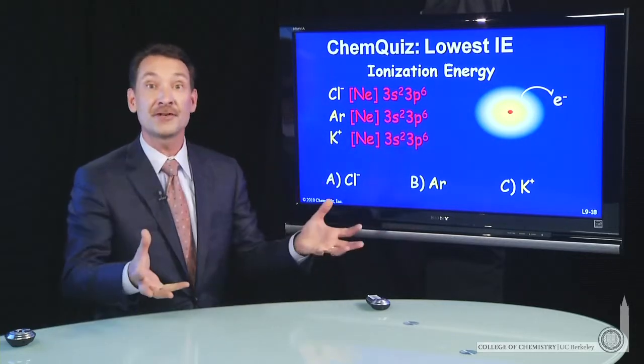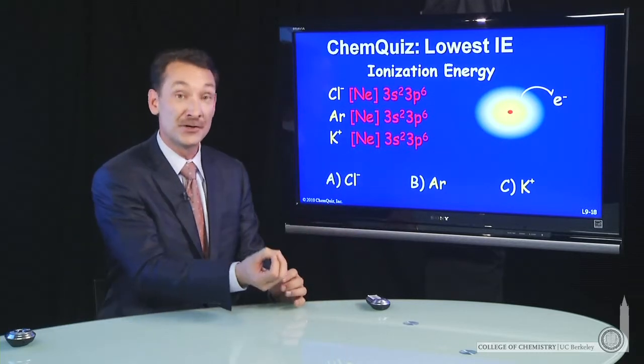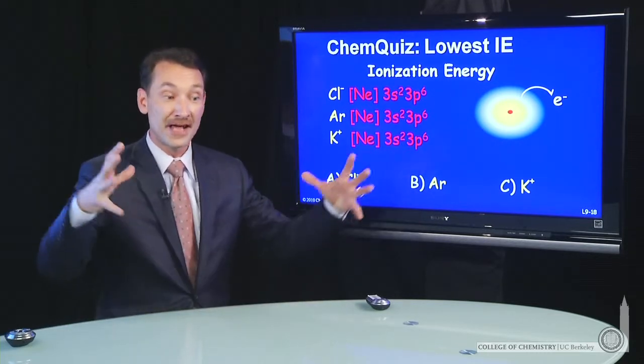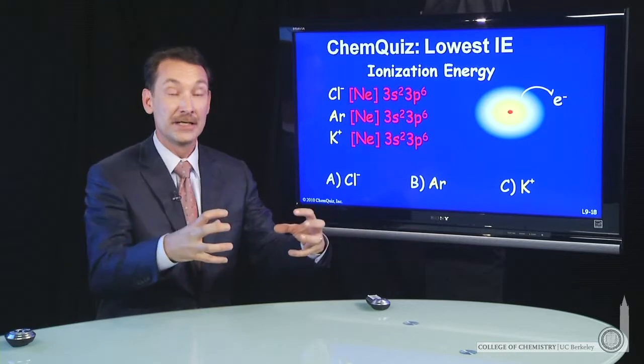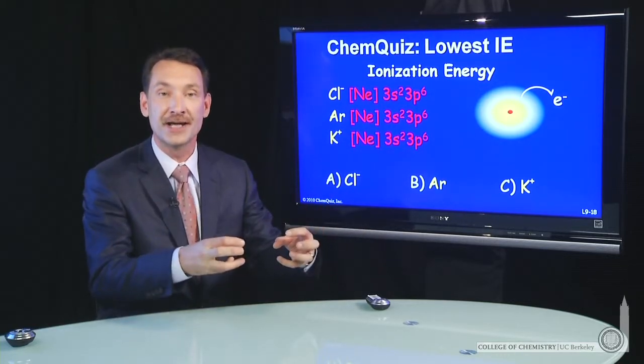Now, if you have the same number of electrons in the same configuration and you increase the nuclear charge, that electronic configuration will contract about the nucleus and be harder to ionize.